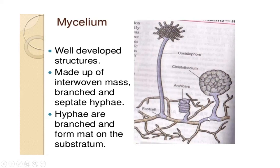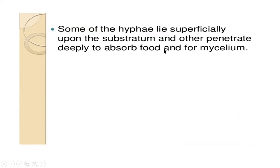When we observe the mycelium under the microscope, the morphology of Aspergillus shows an interwoven mass of branched and septate hyphae. The mycelium is branched, all branches are interwoven among themselves, and the hyphae are septate — you can see the presence of septa in the hyphae. These hyphae keep branching and spread over the substratum, appearing just like a greenish color mat on the substratum due to the production of more and more interwoven branches.